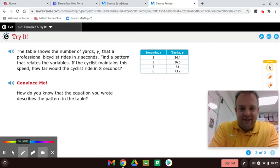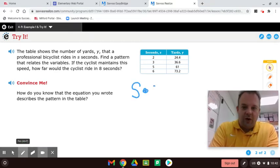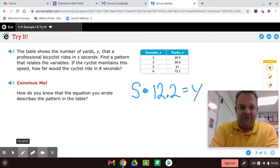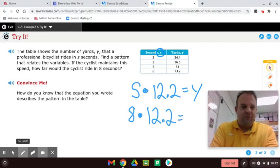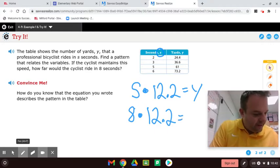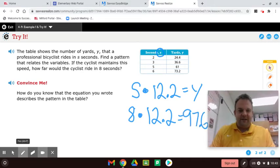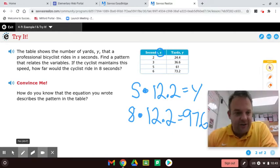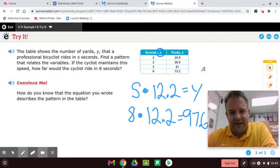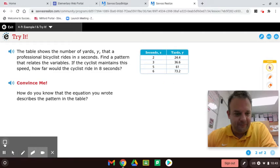For eight seconds we got to do S times 12.2 equals Y. So now we substitute for S for eight seconds, we substitute 8 in. 8 times 12.2 will equal Y. So 12.2 times 8 is 97.6. So 97.6 yards you would go. How do you know that the equation you wrote describes the pattern on the table? We checked each one just to make sure it still follows this same pattern here.